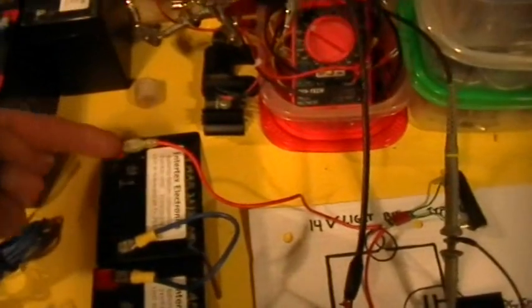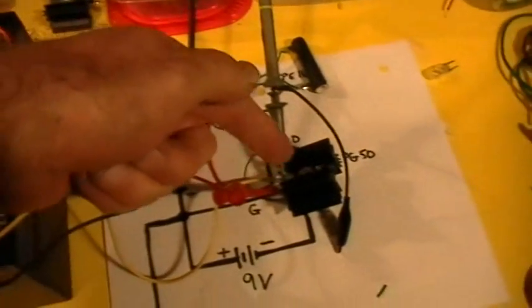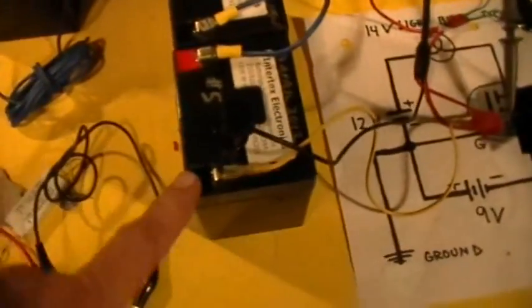Alright, so the current path goes like this. From the positive pole of the 24-volt battery, through the load, to the MOSFET drain, to the MOSFET source, through the function generator, and back to the negative, the common negative.